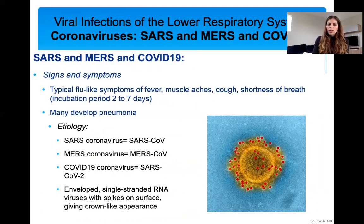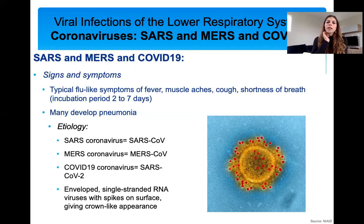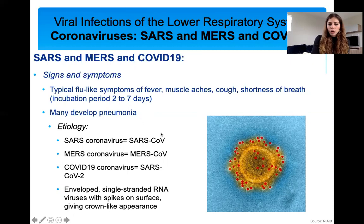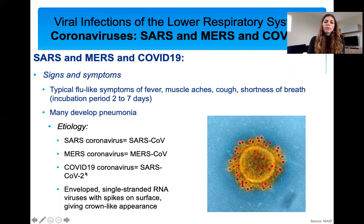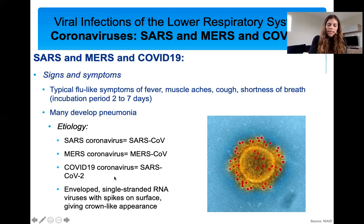Signs and symptoms: with SARS, MERS, and COVID-19, you see typical flu-like symptoms — fever, muscle aches, cough — and the incubation period is two to seven days (about five days for COVID-19). You can develop pneumonia in severe cases. The etiology: SARS is caused by the coronavirus SARS-CoV; MERS by MERS-CoV; COVID-19 by SARS-CoV-2. SARS-CoV-2 is called that because it's most similar to the SARS-CoV virus. All three are different viruses, and all are enveloped RNA viruses with spikes on them.